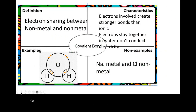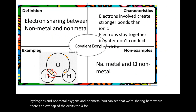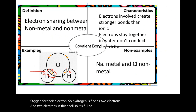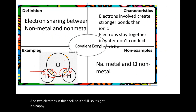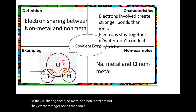Covalent bonds involve electron sharing between nonmetal and nonmetal. Example: water, H2O — hydrogen is a nonmetal, oxygen is a nonmetal. You can see the sharing where there's an overlap of the orbits. The electron from hydrogen shares with the electron from oxygen. Hydrogen is happy with two electrons in its shell, and oxygen has eight. Metal and nonmetal are not covalent — they create ionic bonds. Electrons stay together in covalent bonds and don't conduct electricity.